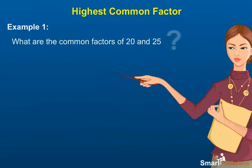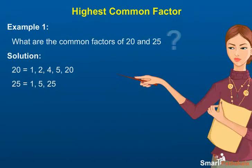Example 1. What are the common factors of 20 and 25? Solution. The factors of 20 are 1, 2, 4, 5 and 20. The factors of 25 are 1, 5 and 25. The common factors are 1 and 5.